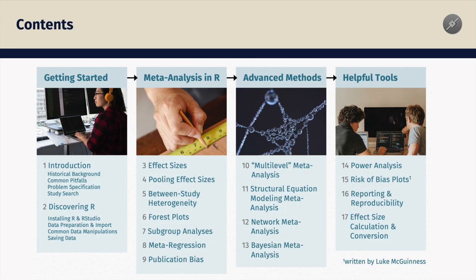Here are the contents we cover. There are four sections: Getting Started, Meta-Analysis in R, Advanced Methods, and Helpful Tools. The contents are intended to be read in a linear fashion, so one chapter after another.